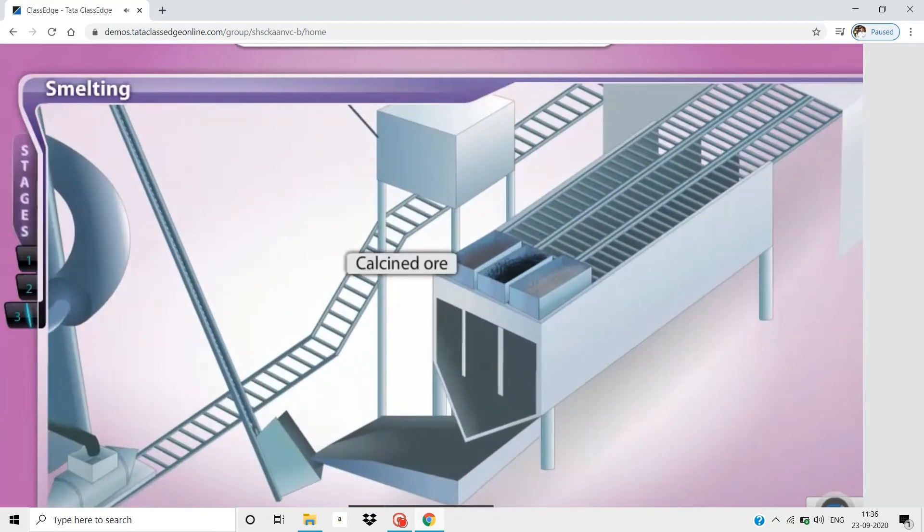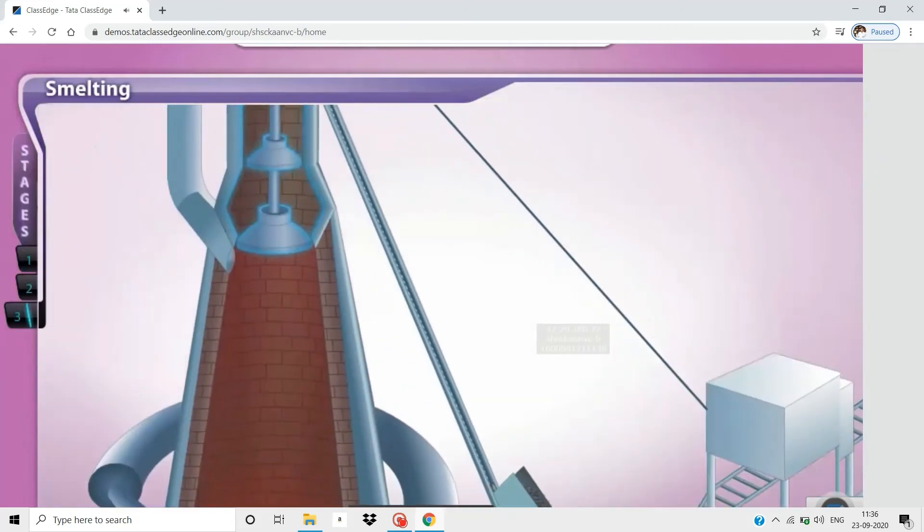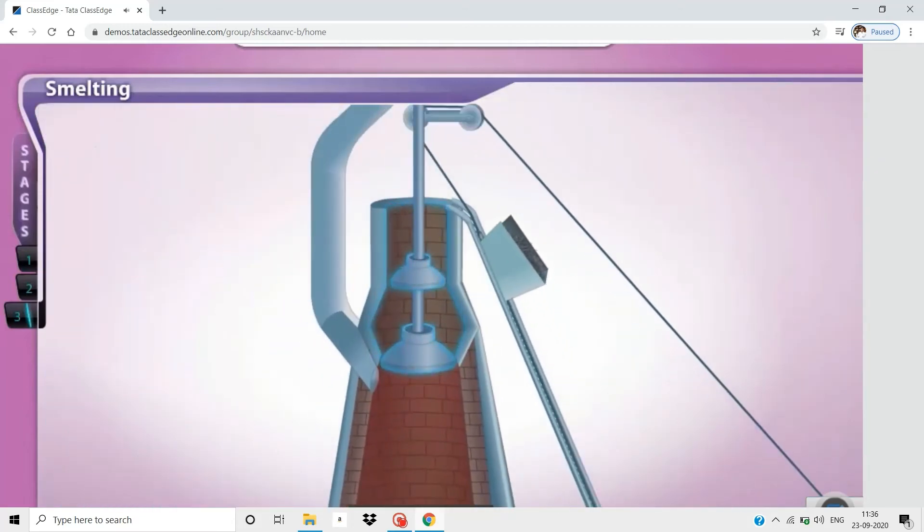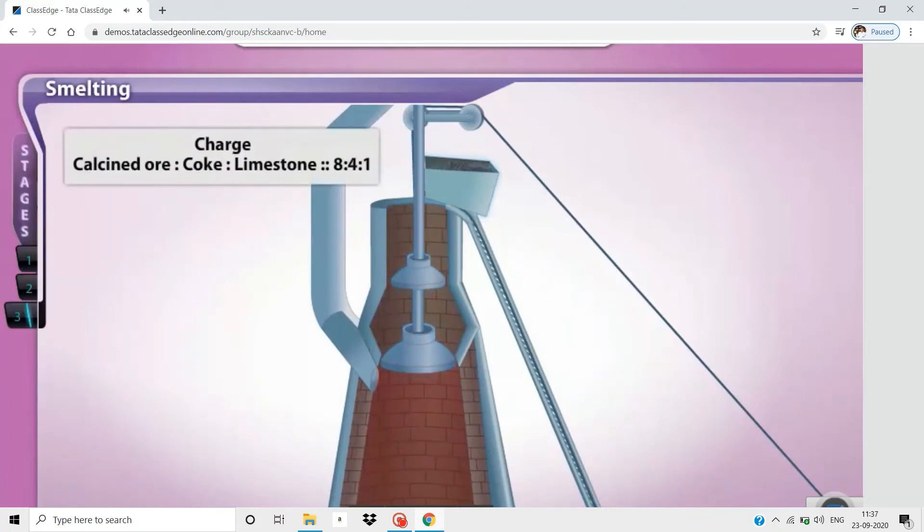The calcined ore collected from the reverberatory furnace is mixed with coke and limestone in the ratio 8:4:1. This mixture is called the charge. The charge is poured into the furnace from the top through the cup and cone arrangement. Click the charge to feed the furnace.